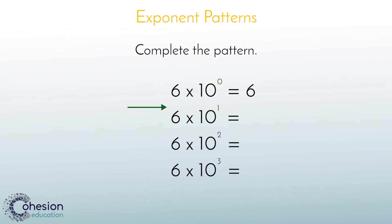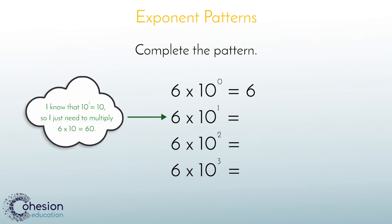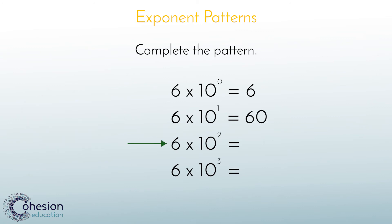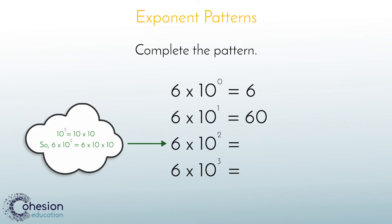The second line shows 6 times the first power of 10. This means the base, which is 10, is represented one time. So to find the answer we would multiply 6 times 10 for a product of 60. The next line shows 6 times the second power of 10. We would multiply 6 times 10 times 10 for a product of 600.